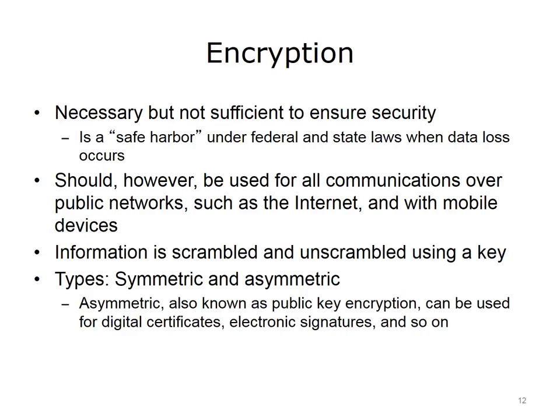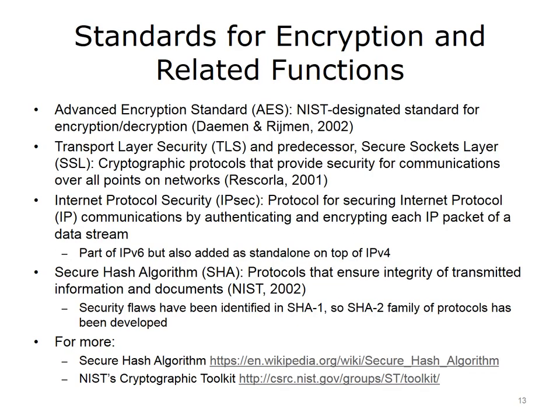The next slides discuss encryption. Although encryption is a necessary precaution, it is not sufficient to ensure security. Any medical communication, whether an email or transmission of a medical record, should be encrypted if it is being sent over a public network because anyone with the right know-how could intercept that information. Encryption is when information is scrambled using a key, which essentially is a randomly generated secret code. As an oversimplified example, a key might convert every A to a 9, every B to a dollar sign, and so on, before a message or document is sent. The recipient must possess a key to unscramble the message. Symmetric encryption is when information is scrambled and unscrambled with the same key. Asymmetric encryption, sometimes called public key encryption, is when a different key is used for scrambling than for unscrambling the information.